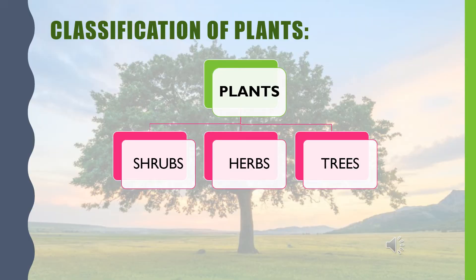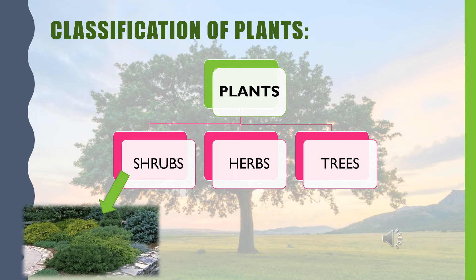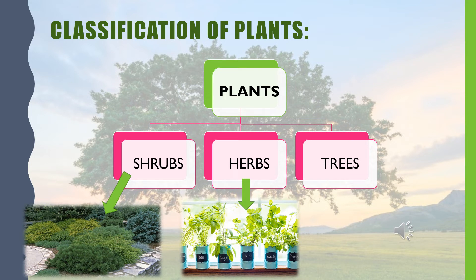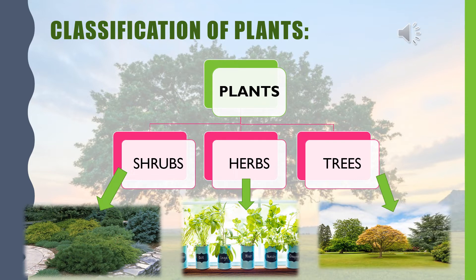Plants have been classified into different categories, which are shrubs, herbs, and trees. Look at the picture — that is how shrubs look like. You will learn more about them in the next class. Now look at the picture of herbs. They are generally small in size.